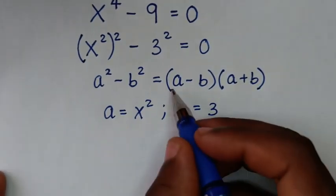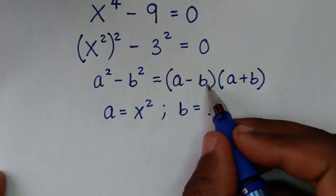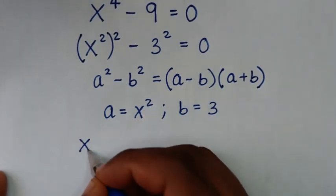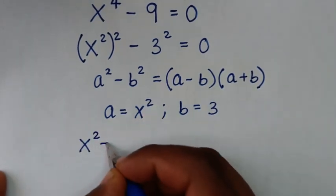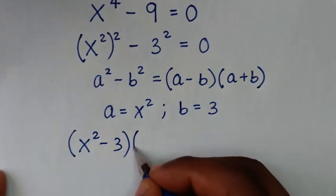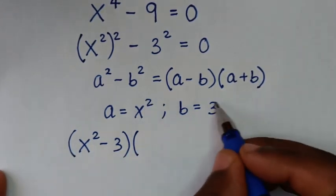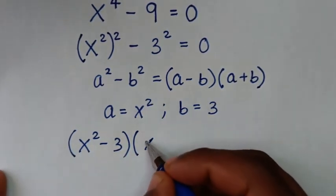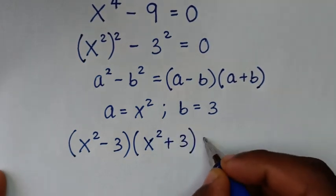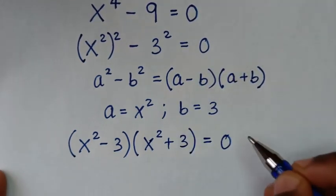And comparing b-squared with 3-squared, b is equal to 3. Then applying the formula, the a minus b part gives us x-squared minus 3, and the a plus b part gives us x-squared plus 3, so the expression becomes x-squared minus 3, times x-squared plus 3, equals 0.